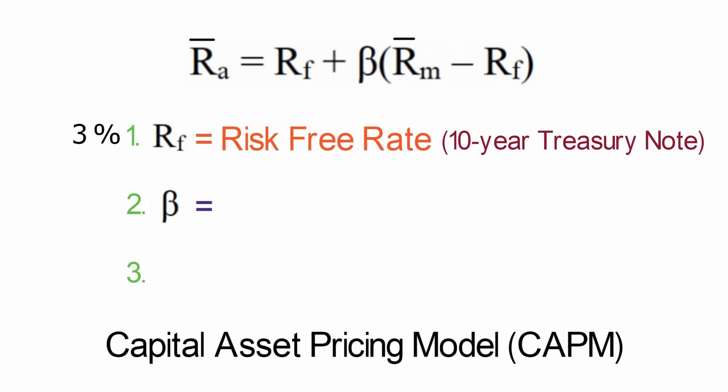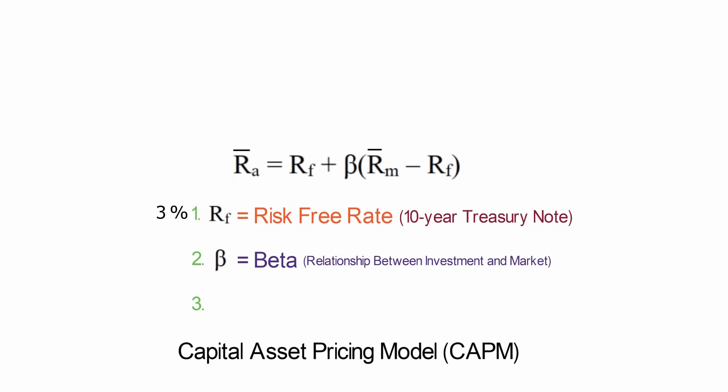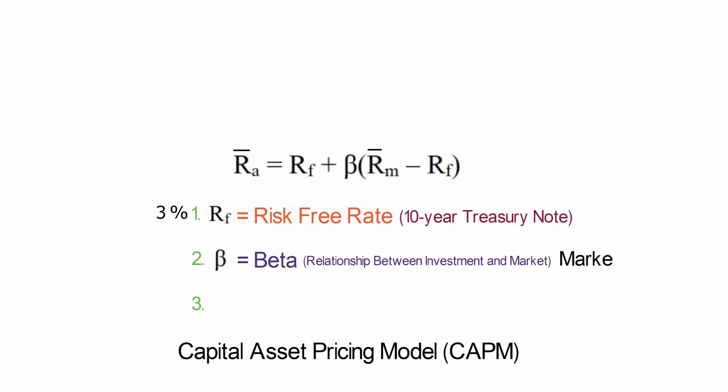Next, we have beta. Beta looks at the relationship between our investment and the market. For our example, we will use a stock. So for us, beta looks at how the stock moves compared to how the stock market moves. The market, by definition,